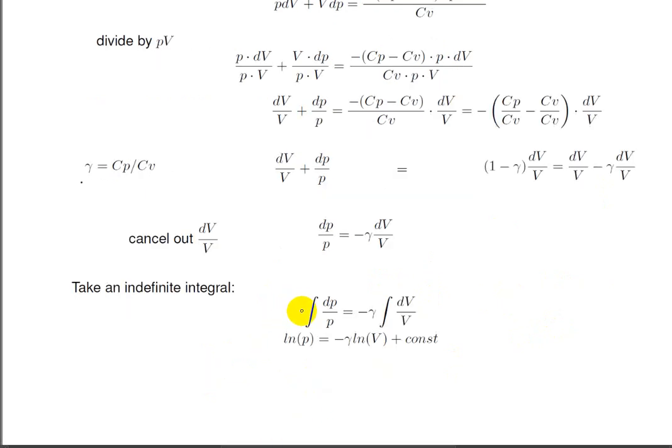Now we take the indefinite integral of both sides, noting that gamma is a constant, so that the indefinite integral of 1 over P dP is log of P, and similarly the indefinite integral of 1 over V dV is log of V. And since it's an indefinite integral, we're adding a constant.